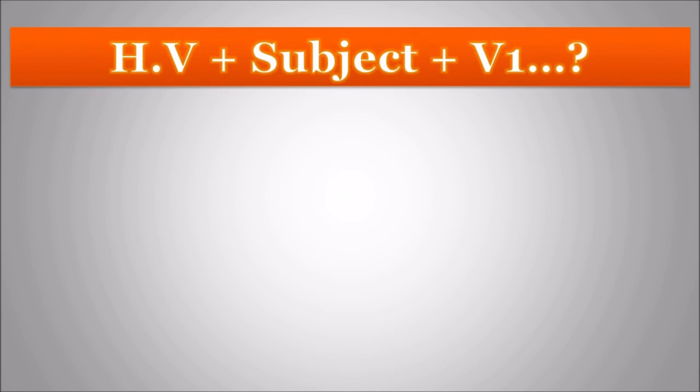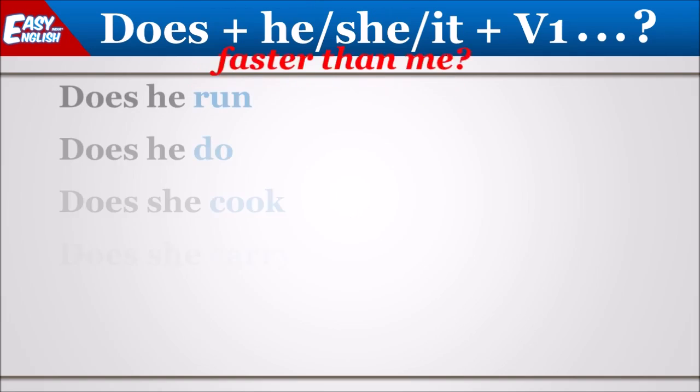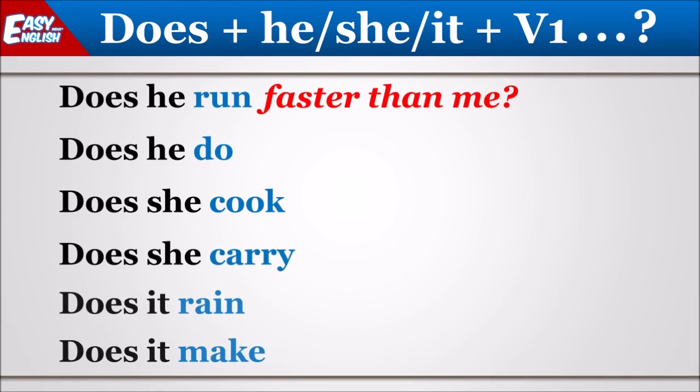followed by the subject and the first form of verb. So let us see some examples. Does he run faster than me?